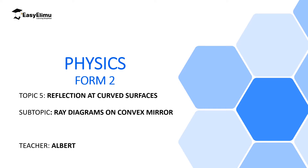Welcome to ECLIMU, learning simplified. In the previous lesson we discussed how to construct ray diagrams on concave mirrors and the characteristics of images formed. For a concave mirror, unless the object is placed between the focal point and the pole, all images formed will be upside down — sometimes magnified, sometimes diminished. When the object is between the focal point and the pole, the image is virtual, always magnified, and formed behind the mirror. In this lesson we discuss ray diagrams on convex mirrors. All images formed by a convex mirror are always smaller than the object, behind the mirror, virtual, and always upright.